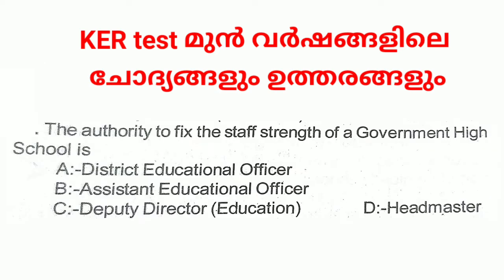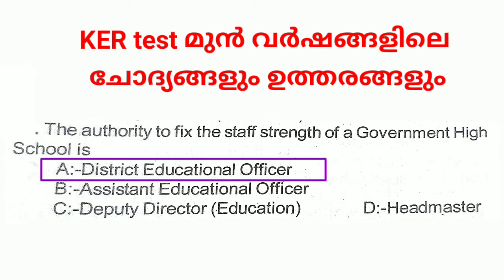The authority to fix the staff strength of a government high school is: A. District Education Officer, B. Assistant Education Officer, C. Deputy Director Education, D. Headmaster. Answer: A. District Education Officer.